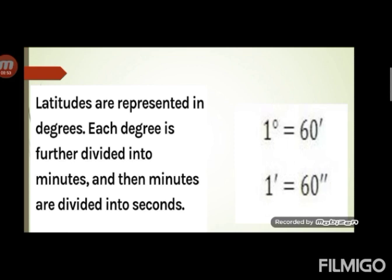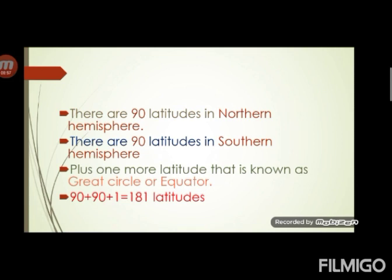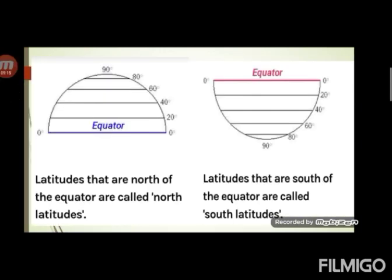Let us see how many latitudes there are. There are 90 latitudes in the northern hemisphere and 90 latitudes in the southern hemisphere, plus one more latitude known as the great circle or equator. So in all, we have 181 latitudes. At the north pole and south pole there is just a point, because the earth is spherical and as we move away from the equator towards the pole, it becomes smaller and smaller. Earth also bulges out at the center, so the equator is called a great circle.